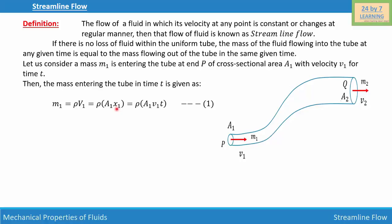And distance is basically velocity times time so we will write that equals ρA₁v₁t where A₁ is the area of cross section at P, v₁ is the velocity at which the fluid is entering point P and t is the time of travel. Let this be equation number one.